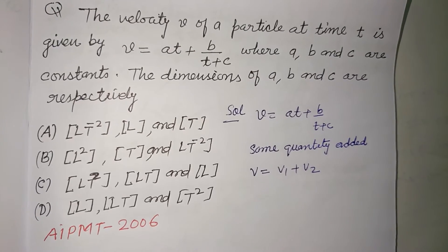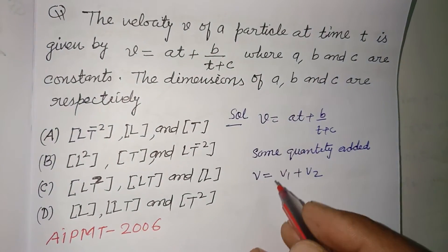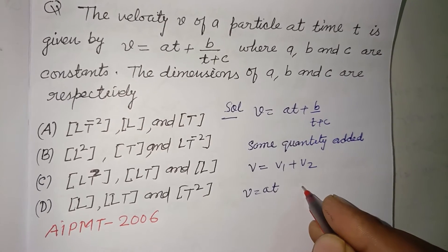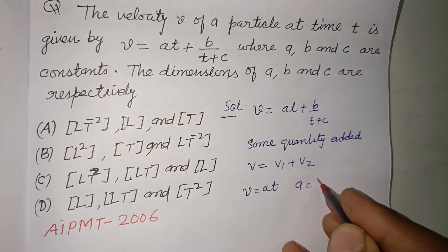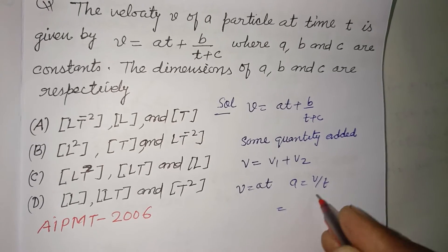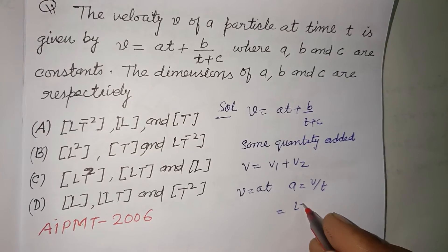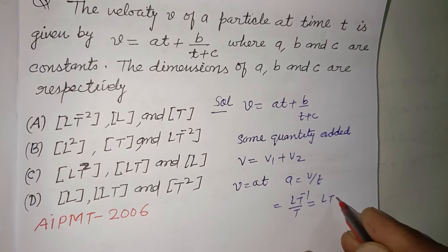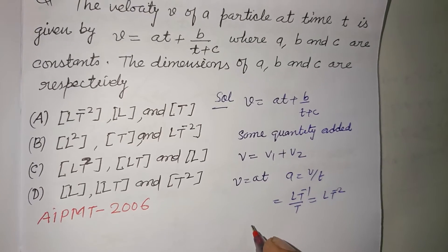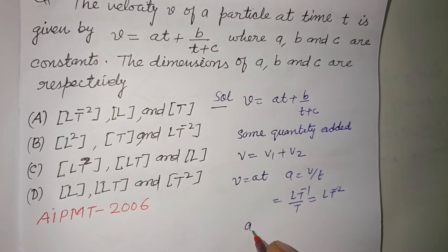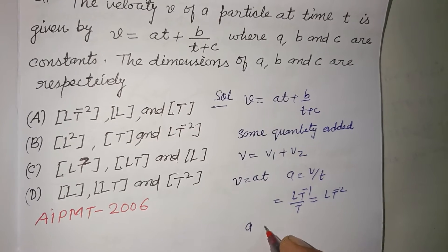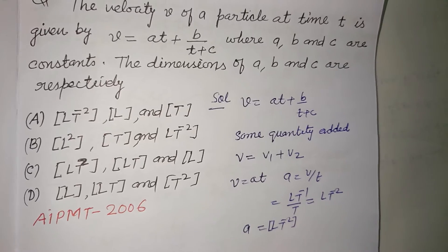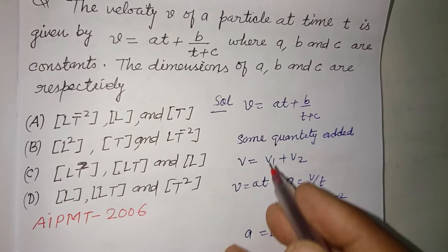From v equal to at, we get a equal to v over t. The dimension of v is LT⁻¹, divided by t gives LT⁻², therefore a has dimension LT⁻².